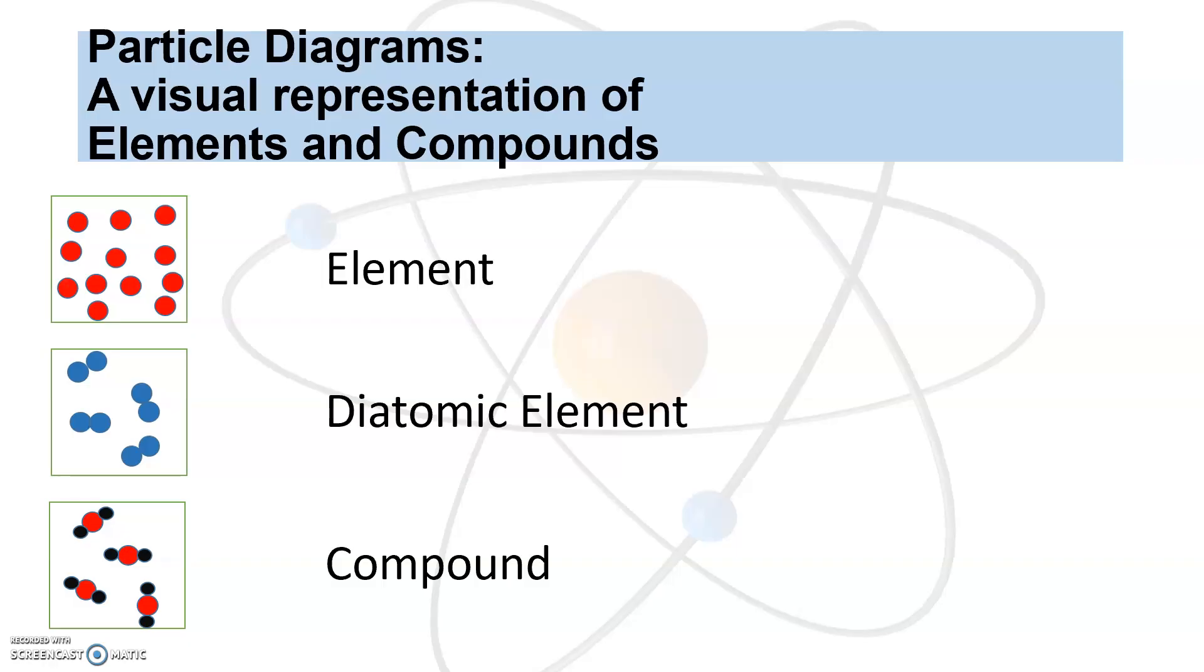Now if I look at the next example I've got these, they're blue, they're the same color and they're the same size but notice how they're touching there. And what that means is they're bonded together. If you remember in our previous lecture we talked about diatomic elements. So this could be nitrogen N2 or oxygen O2. We have the same element but it's combined with itself so that there's two of them. That's called a diatomic element.